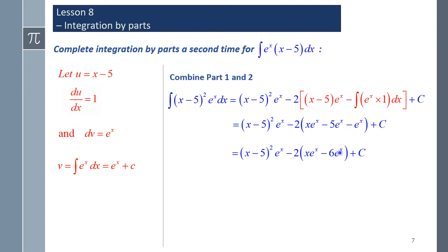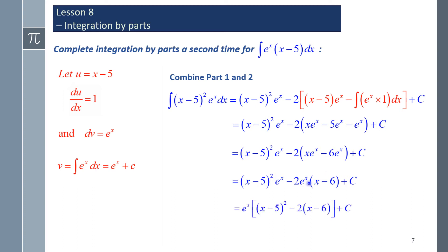Collecting like terms, there is a negative 6eˣ term, and we have a common eˣ factor to factorize out. From part 1 and part 2, taking out the eˣ, we are left with (x minus 5) squared minus 2(x minus 6). Simplifying in terms of x squared, x, and a constant, we get eˣ times (x squared minus 12x plus 37) plus c.